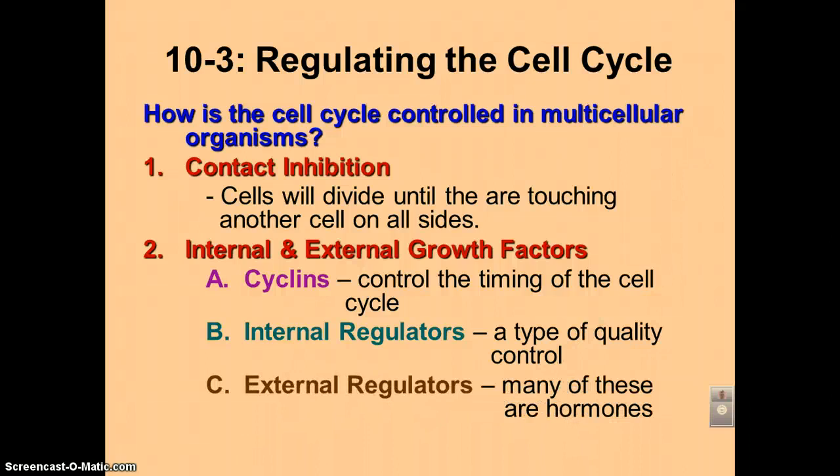We also have external factors, and a lot of these are hormones. For example, human growth hormone is an external regulator that will tell certain cells they need to start to divide.